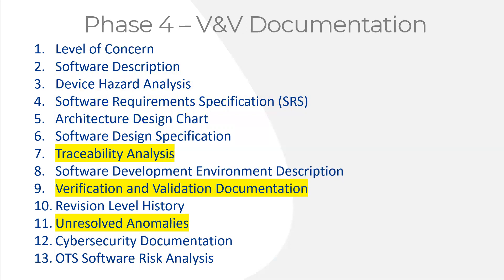That's what you're expected to compile — all this documentation — after going through the four phases of design and development for a software as a medical device. You compile everything into a 510(k), which goes into section 16 of your submission to the FDA. The FDA will then begin their review, which typically takes about 90 to 120 days. The FDA may ask questions, which is why it could take longer than 90 days.